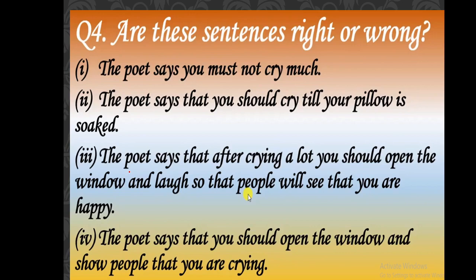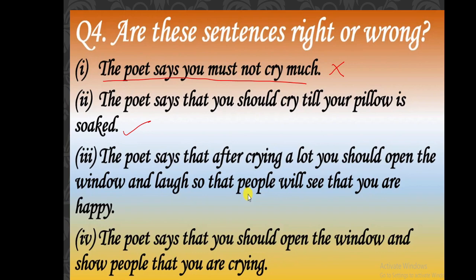Now come to the last question. Are these sentences right or wrong? Read each sentence and find out whether it is right or wrong. First sentence: 'The poet says you must not cry much' — this is wrong, because the poet says you must cry a lot. Second sentence: 'The poet says that you should cry till your pillow is soaked' — this is correct, because the poet says the same thing.